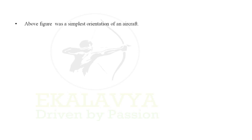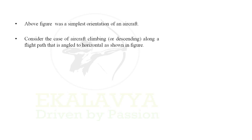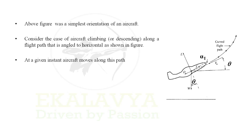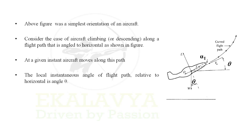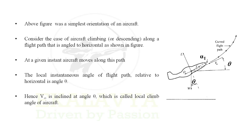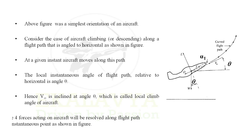The above figure was the simplest orientation of an aircraft flight path. Now consider the case of an aircraft climbing or descending along a flight path inclined at an angle to the horizontal, as shown in the figure. At each instant the aircraft moves along this path. The local instant angle of the flight path relative to the horizontal is angle theta, and hence V-infinity is inclined at angle theta, which is called the local climb angle of the aircraft.